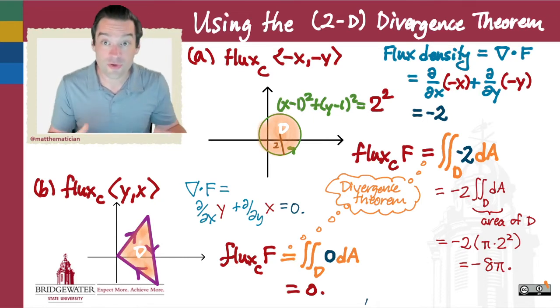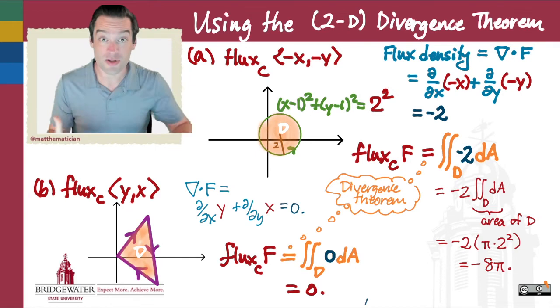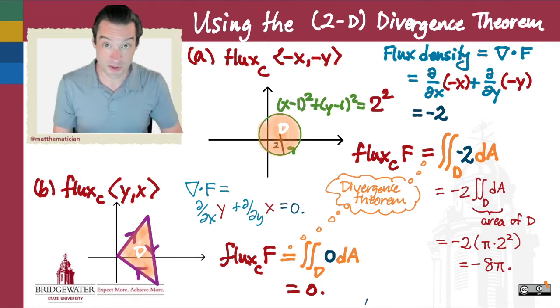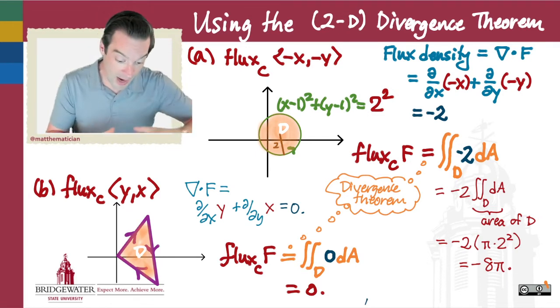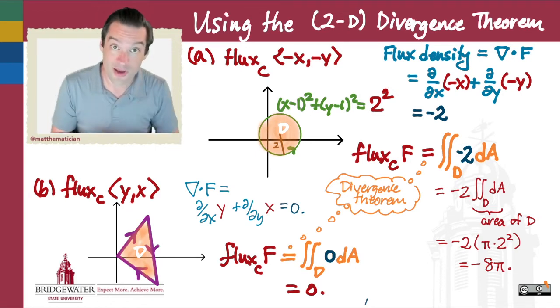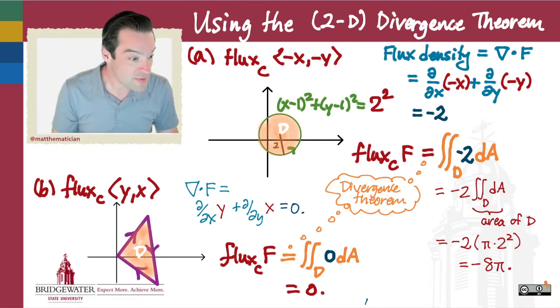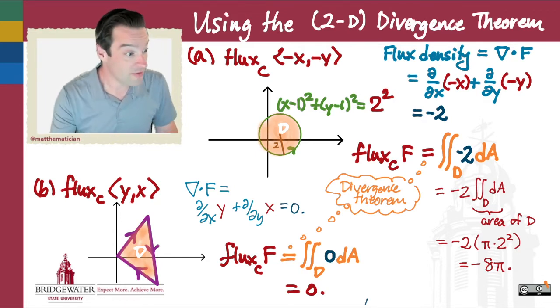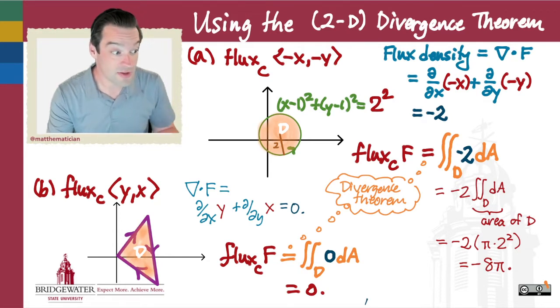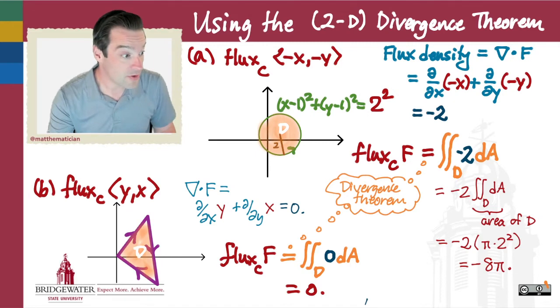These are two-dimensional expressions of the divergence theorem. They give us the flux out of a closed curve in the two-dimensional plane via a double integral of the flux density, which is just another name for the divergence.